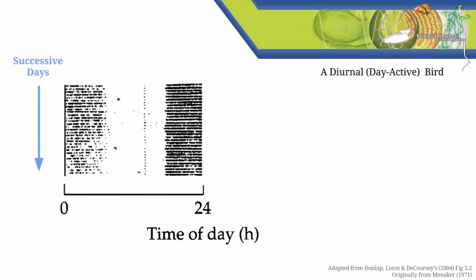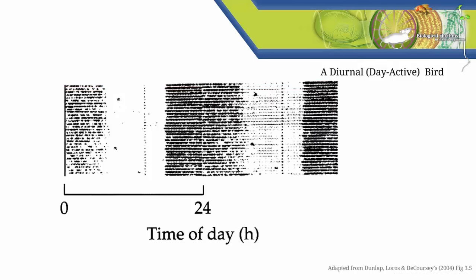You ought to be able to tell that the bird is entrained to a light-dark cycle since the onset of activity occurs once every 24 hours. Right now this actogram is single plotted. Let's go ahead and double plot all the data. So we're going to take the record of the second day's activity, which is shown here on the second row, and we're going to duplicate it on the right-hand side of the first row. And we'll do this for every row of data. So instead of each line showing only 24 hours of data, each line will show 48 hours of data.